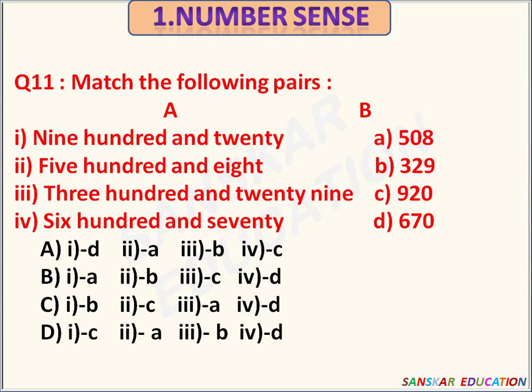Match the following pairs. Section A and B. Numbers: 920, 580, 329, 670. The correct answer is Option D.